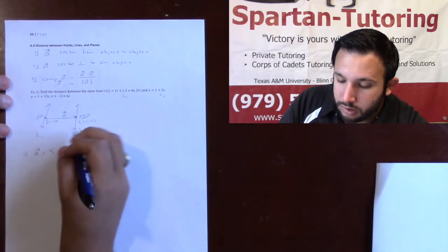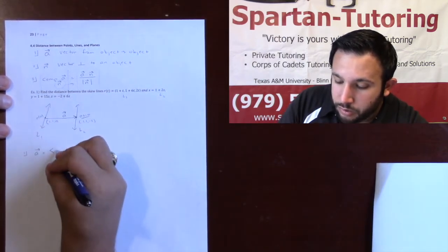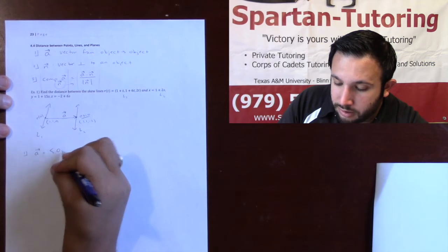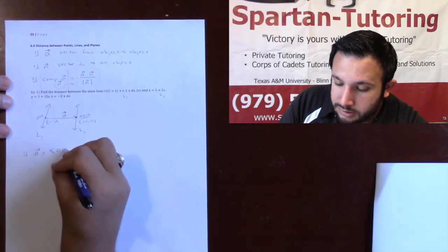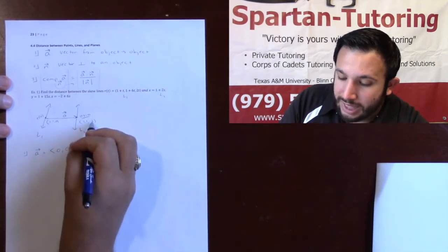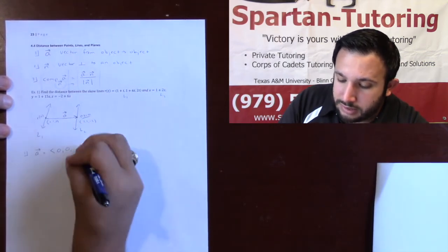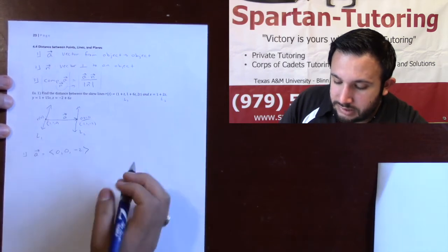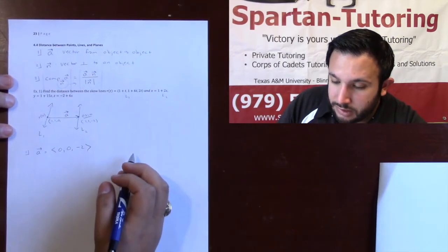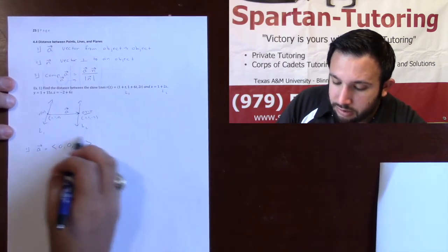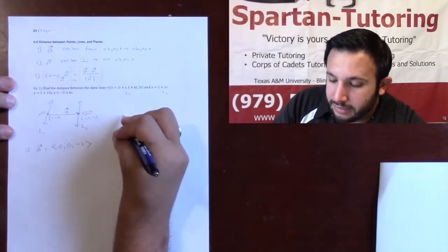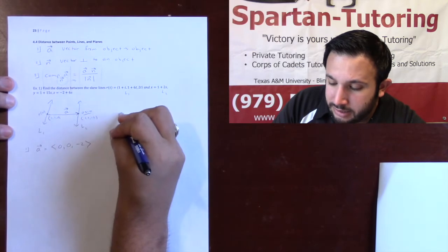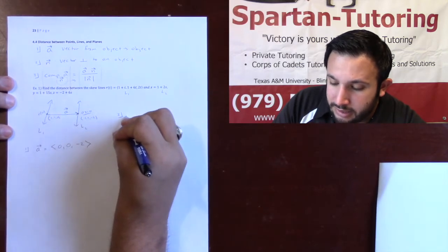Remember, these are points, not vectors. To find vector A, you do tip minus tail: (1−1, 1−1, −2−0), which gives vector A = (0, 0, −2).